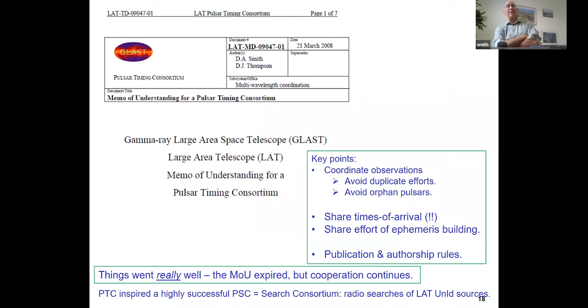And the MOU expired after a year or two. And today, we just keep working as if, you know, here we are 14 years later. And we just keep going. And in addition to the Pulsar Timing Consortium, there's something called the Pulsar Search Consortium, which is, to a large extent, the same people, same instruments, but a different goal. The goal is to search for unknown radio pulsars in pulsar-like unidentified gamma-ray sources. You can ask me about that later if you like.